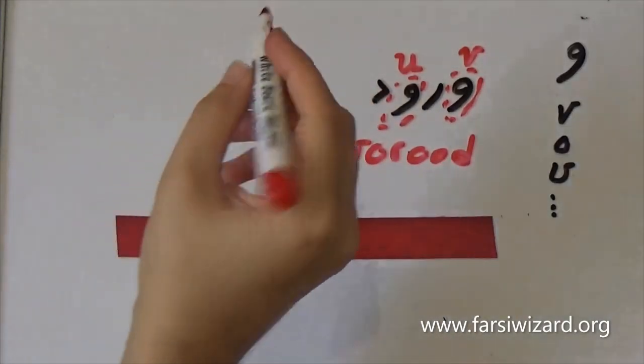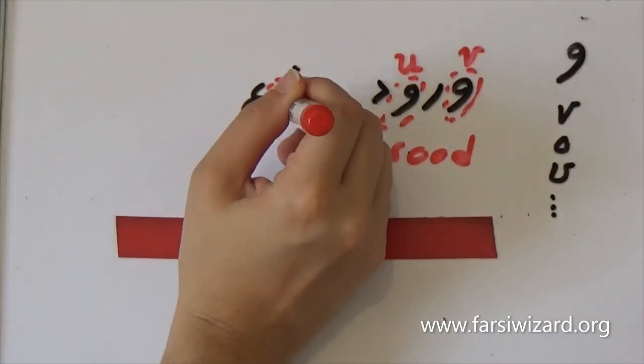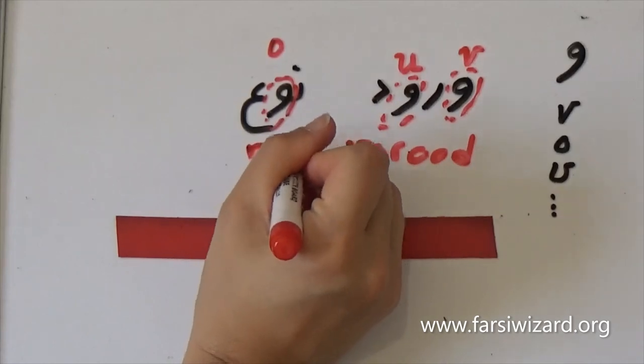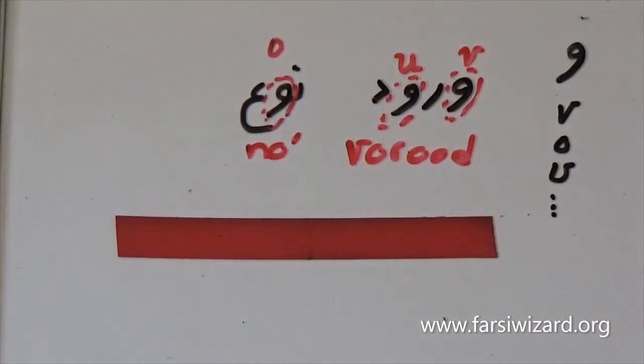So another good example is the word no. Again here you see the letter vav but now it sounds like O. No means type or sort. Cheno, what type? What sort?